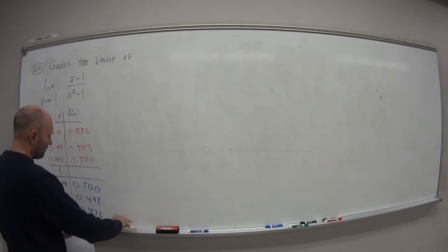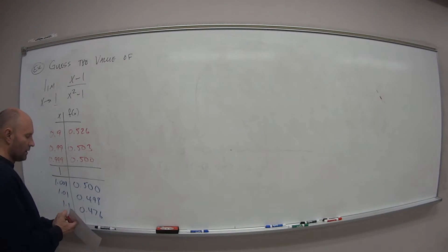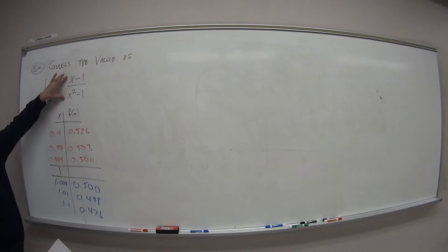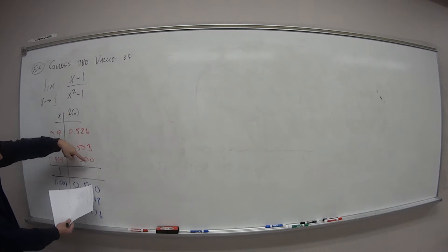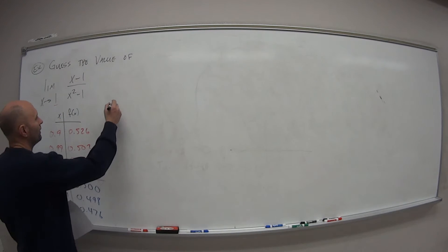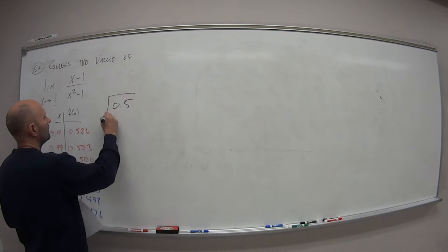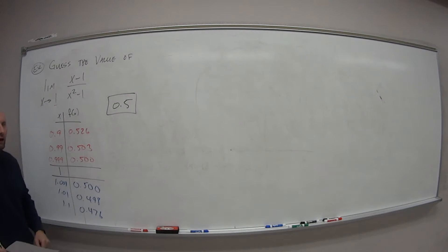So 0.5 which is what? It's a half. So our guess then is what? Is the limit as x approaches one of this function would be, well what are we getting closer and closer to? We're getting closer and closer to 0.5. So that would be our answer there.